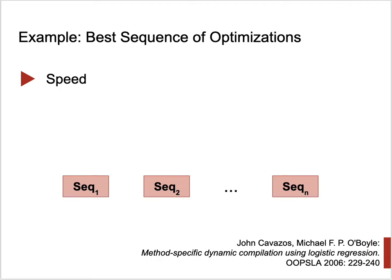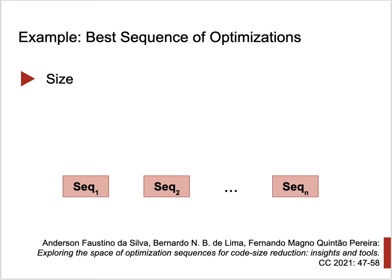This would save time in just-in-time compilation. This idea was tried by John Cavazos and Michael Boyle in 2006 in the context of Java — they had a technique to infer the best sequence of optimizations for a program, with speed as the objective function. More recently, Faustino showed how to find good optimization sequences to produce smaller binaries, targeting size rather than speed.